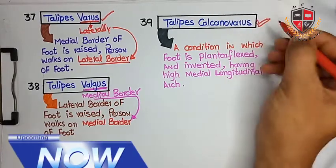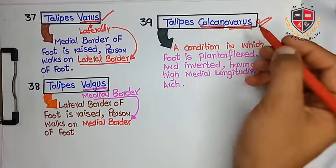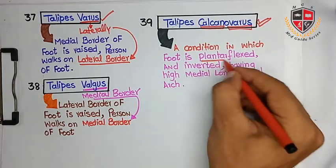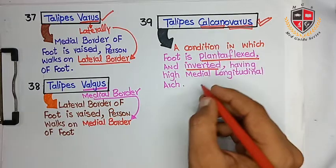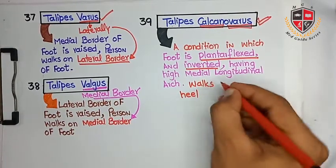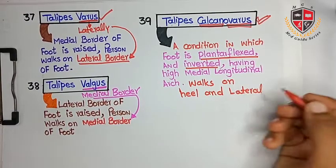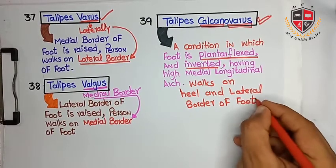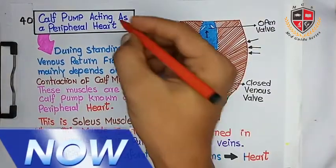The next clinical is talipes calcaneovalgus, which is a compound combination of two conditions. Calcaneus means heel and valgus means lateral border. In this condition the foot is plantar flexed and inverted, having a high medial longitudinal arch, and the person walks on the heel and lateral border of the foot.